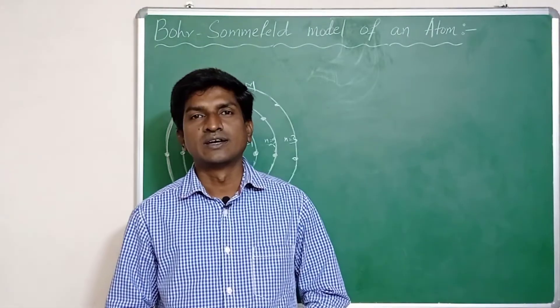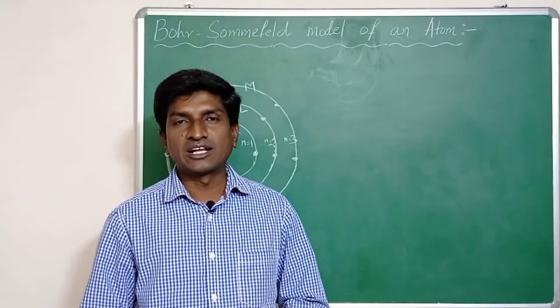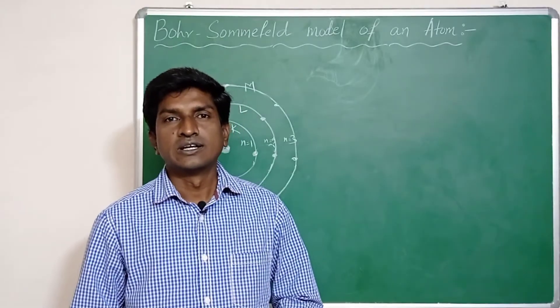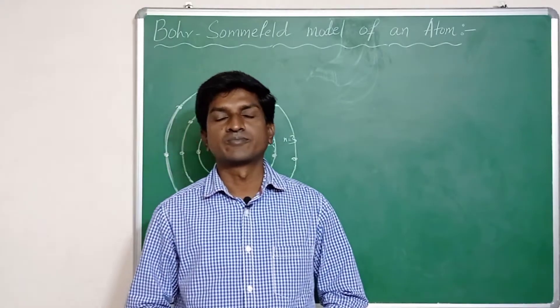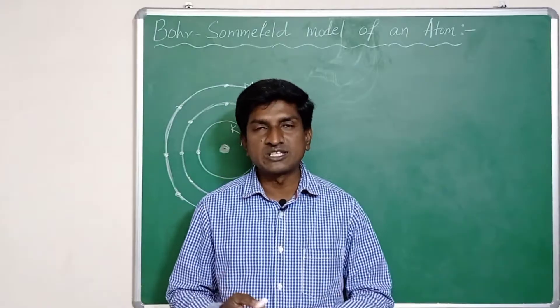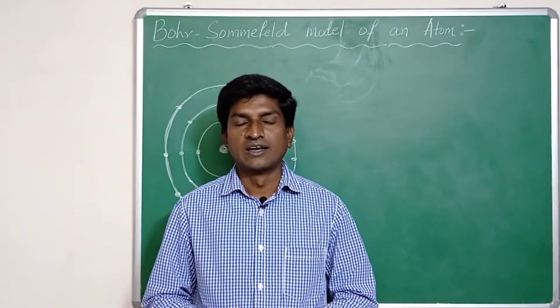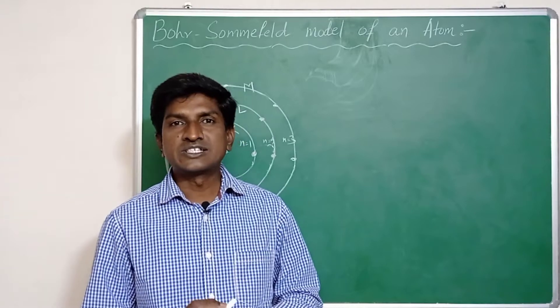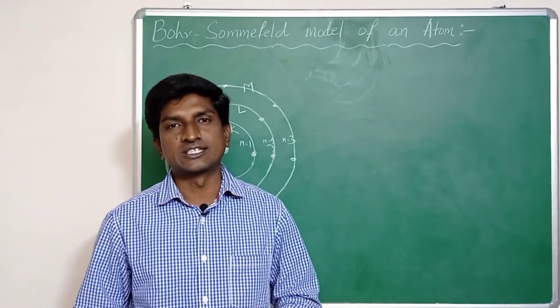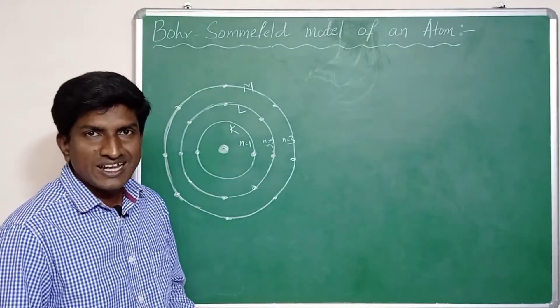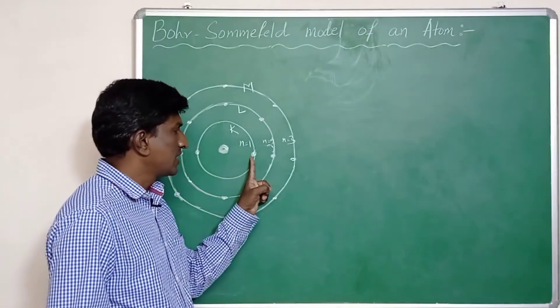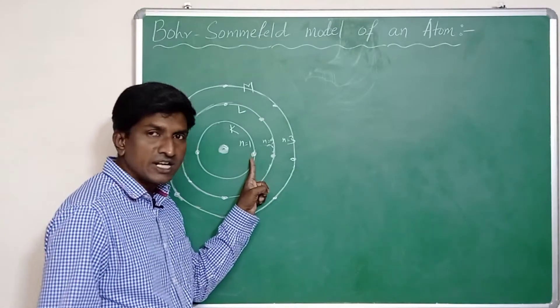Bohr proposed that the electron of an atom occupies stationary orbits. These orbits have fixed energy and are at different distances from the nucleus. When electrons jump from lower energy state, or ground state, to excited state, energy is absorbed.